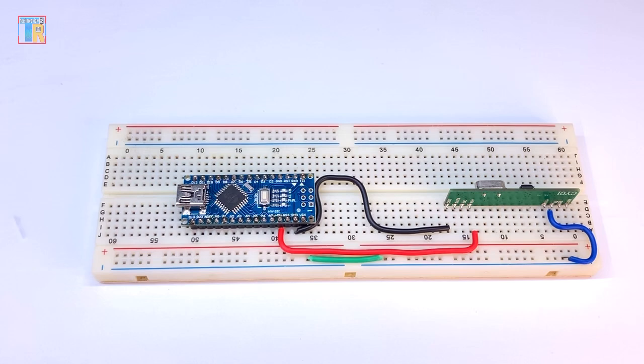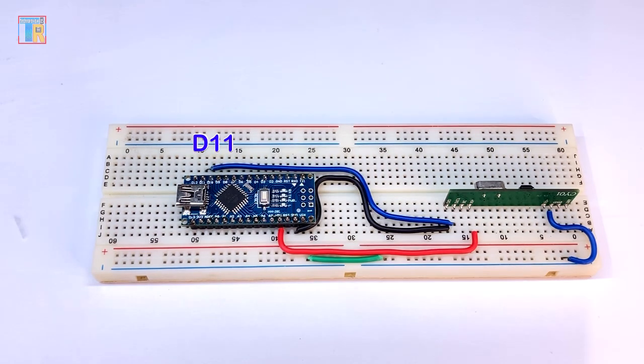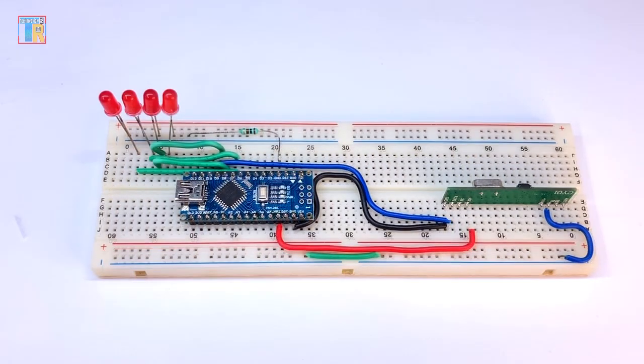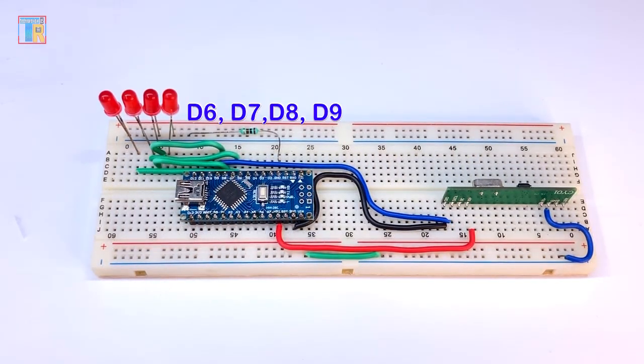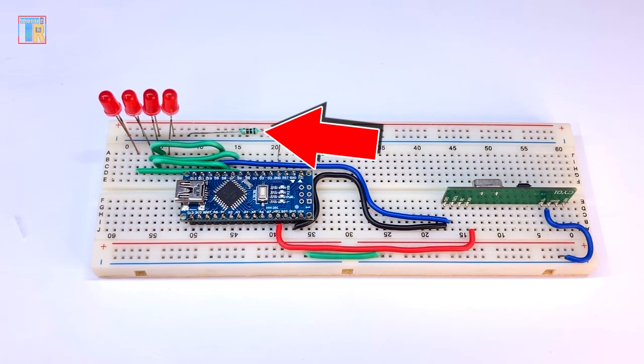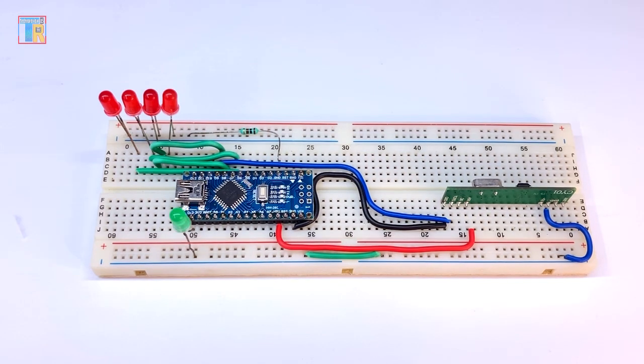For red LED, positive is connected to Arduino D6, 7, 8, and 9. LED negative pins are connected to Arduino GND via 100 ohm resistor. Green LED positive is connected to Arduino D13 and negative pin to GND.